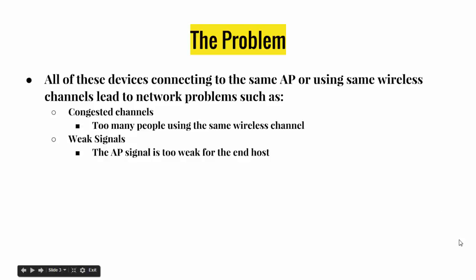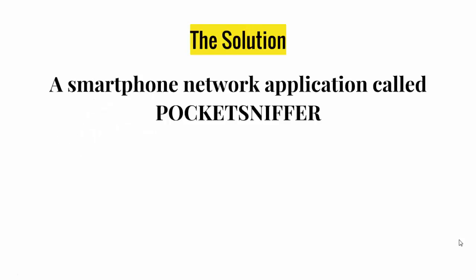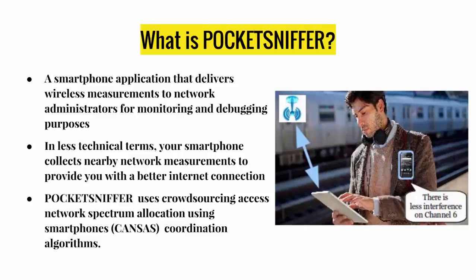So what is the solution? The solution is a smartphone network application called Pocket Sniffer. Pocket Sniffer is a smartphone application that delivers wireless measurements to network administrators for monitoring and debugging purposes. In less technical terms, your smartphone collects nearby network measurements to provide you with a better interconnection. Pocket Sniffer also uses crowdsourcing access network spectrum allocation using smartphones — we'll call this the CANTOS coordination algorithms.